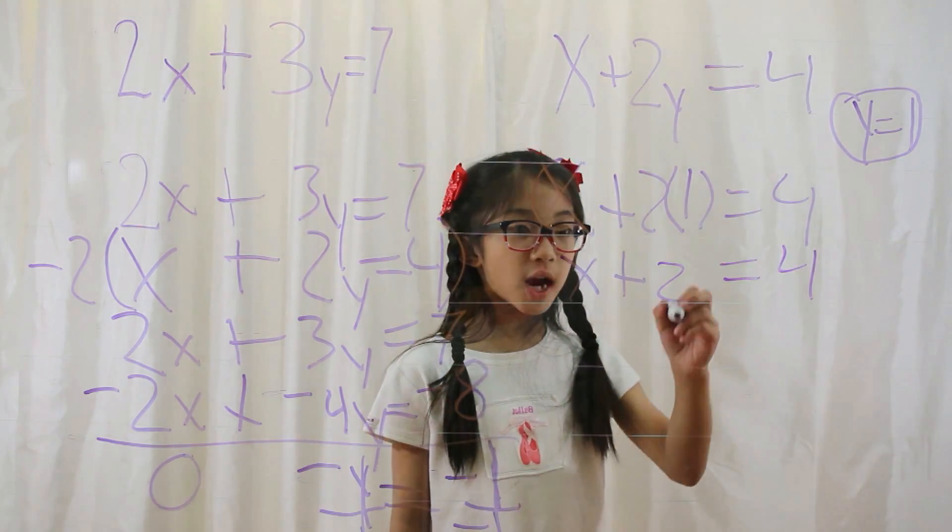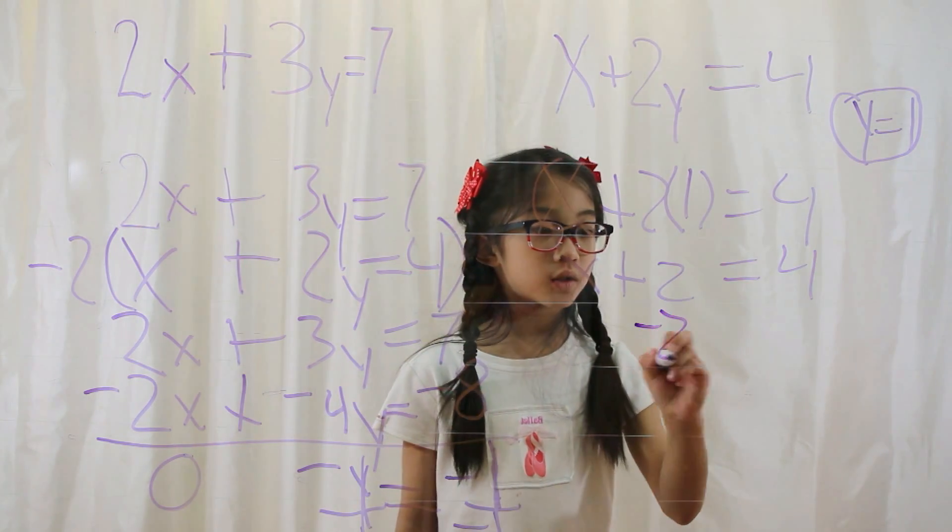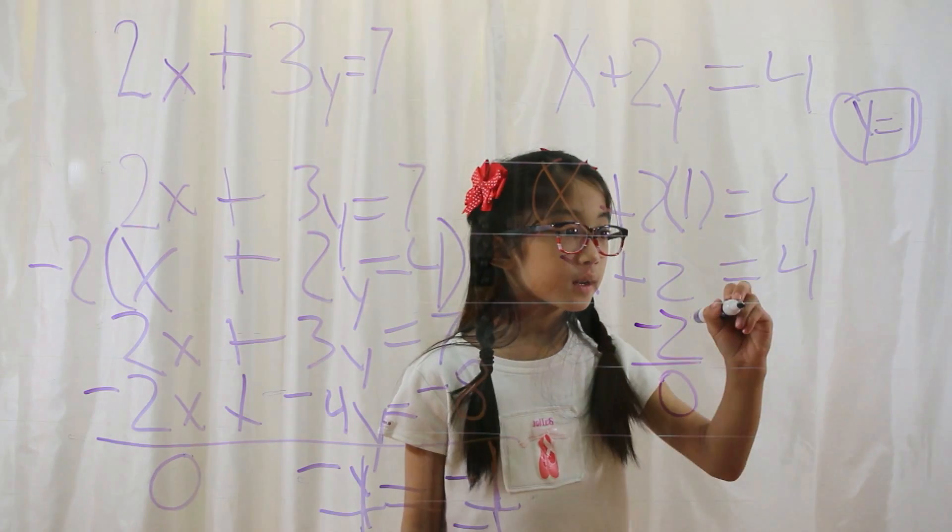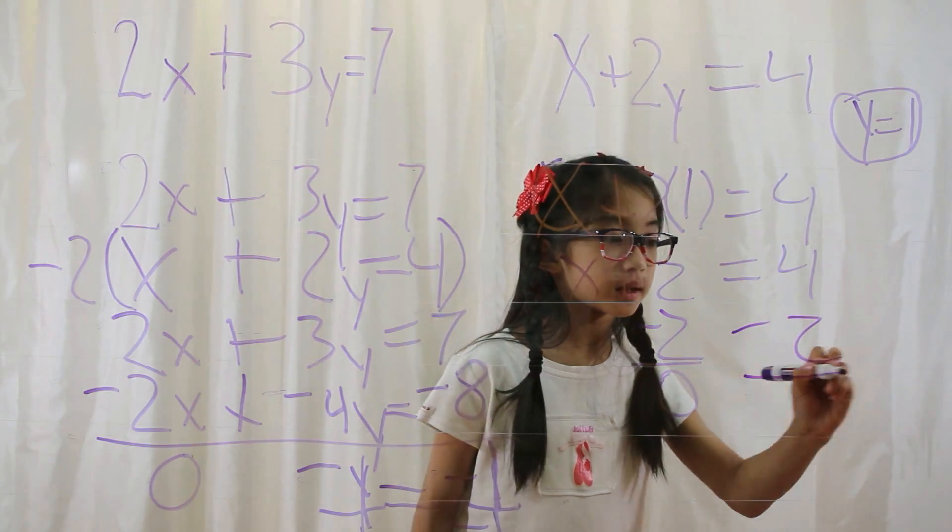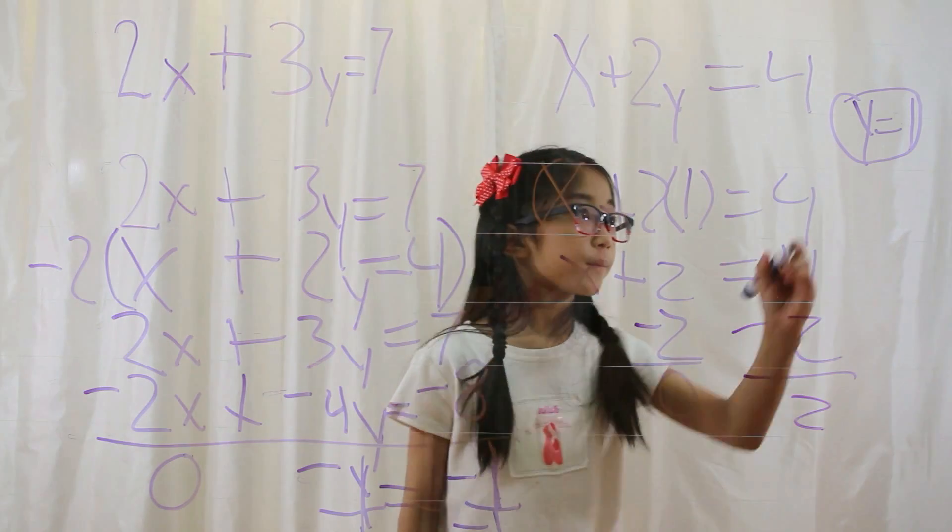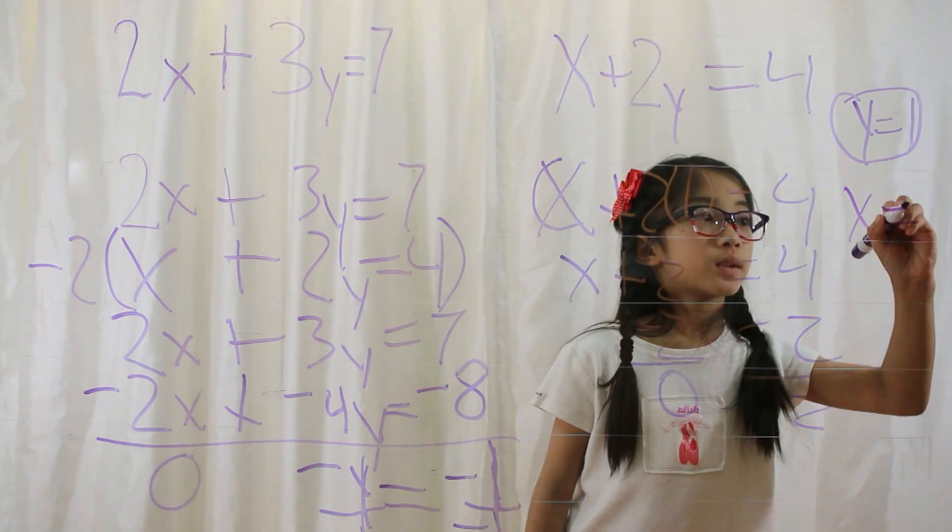Now you subtract on both sides. 2 minus 2 equals 0. 4 minus 2 equals 2. x equals 2.